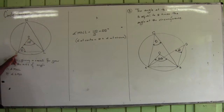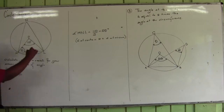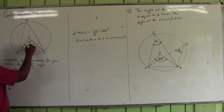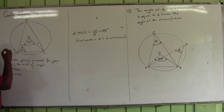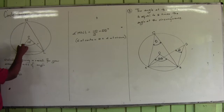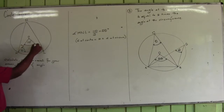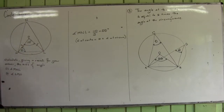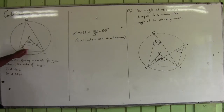Look at the line from O to M — that is a radius. This is a radius, and this is also a radius. Can we agree that this side and this side are equal? Fine. If those two sides are equal, this triangle is an isosceles triangle.